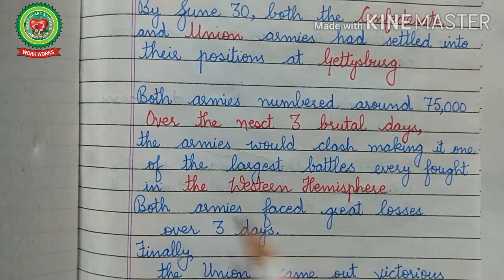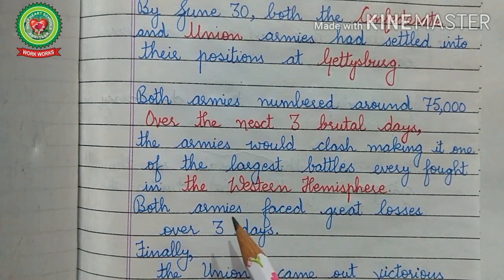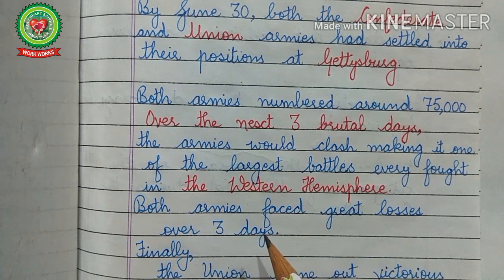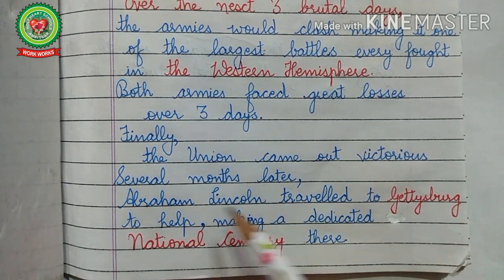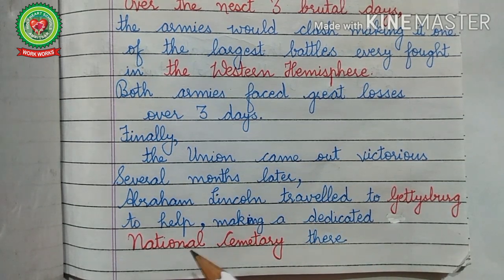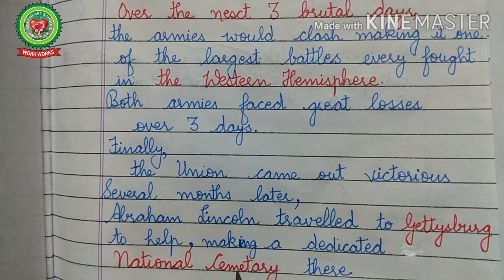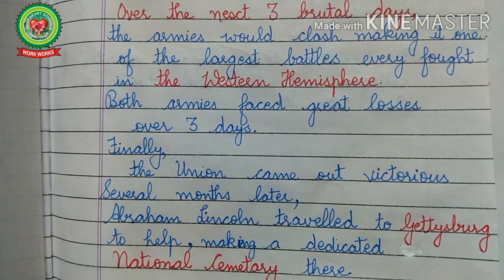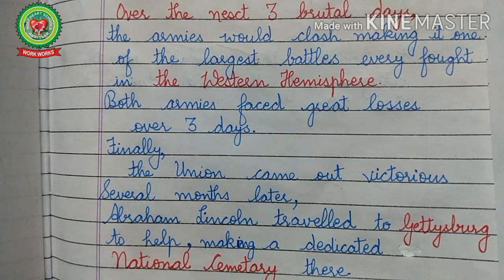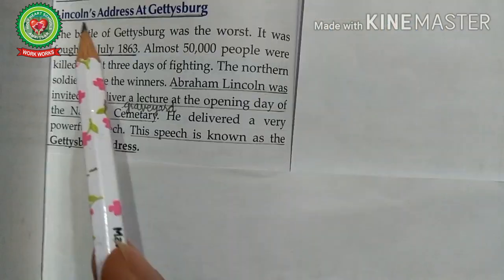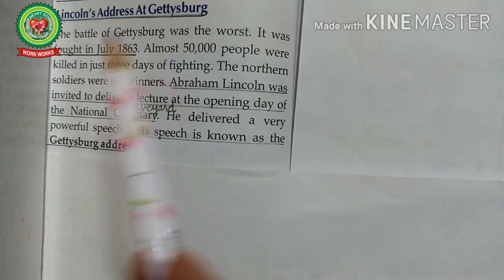Over the next three brutal days the armies clashed, making it one of the largest battles ever fought in the western hemisphere. Both the Union army and the Confederate army faced great losses over those three days. Finally the Union came out victorious. Several months later, Abraham Lincoln traveled to Gettysburg to help make a dedicated national cemetery there. A ceremony was held at the site in Pennsylvania to dedicate the cemetery for the Union dead, and there Abraham Lincoln gave a speech famous as the Gettysburg Address.